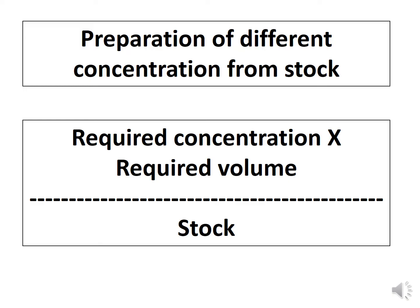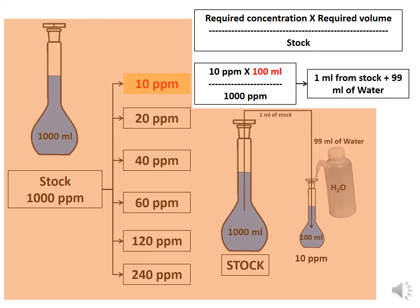For the preparation of different concentrations from the stock, we use the formula: required concentration multiplied by required volume, divided by stock concentration. For example, to prepare 10 ppm of solution from 1000 ppm of stock, we calculate: 10 ppm × 100 ml ÷ 1000 ppm, giving us 1 ml.